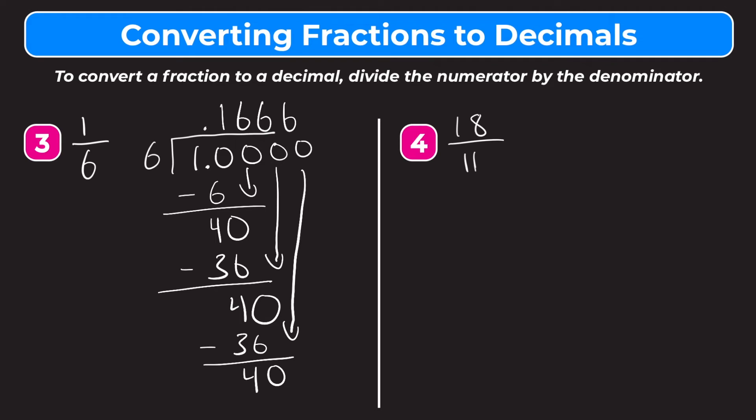When you have a repeating decimal you have two options. One option is to round — typically to the hundredths or the thousandths place. If we round to the thousandths place we have 0.1666, and we look to the right of the thousandths digit, which is a six, so we round up. Our rounded answer would be 0.167. The other option is to write the decimal as 0.16 with a bar over the six, which signifies that the six repeats on forever.